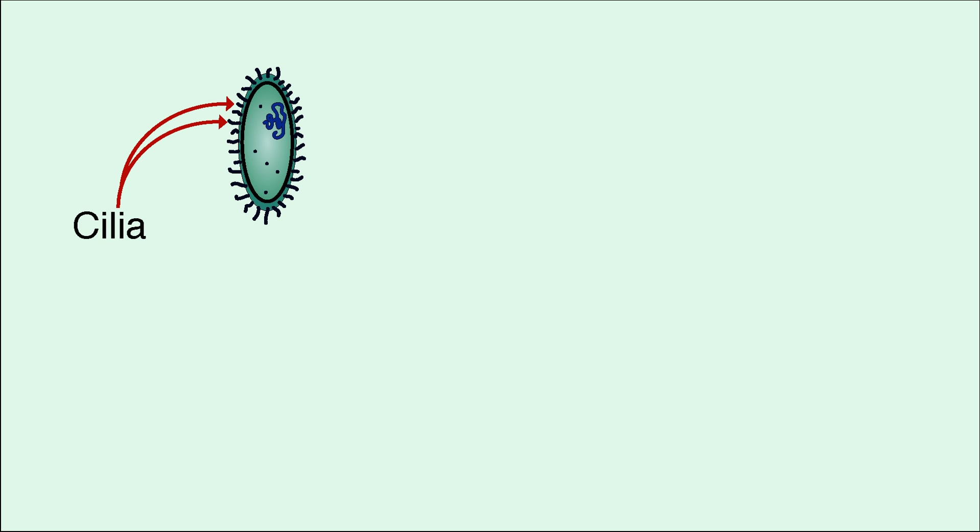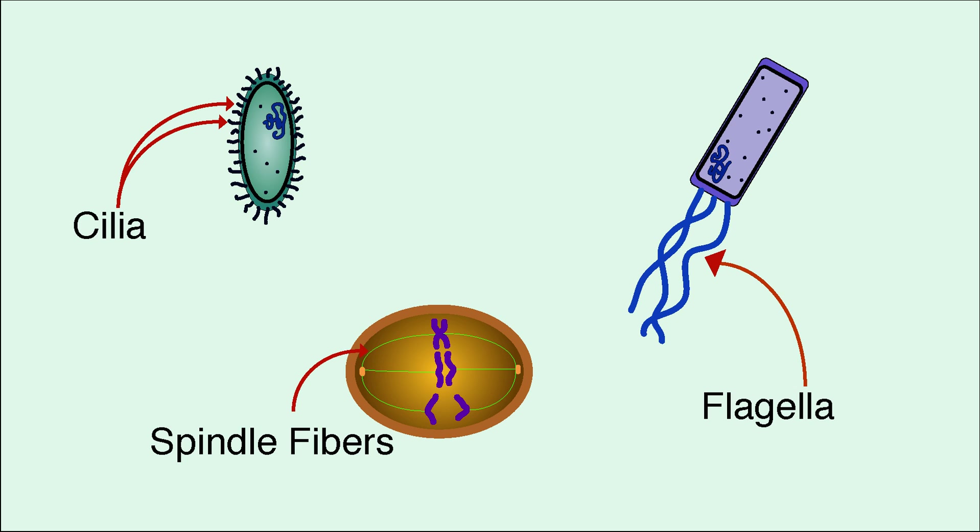Microtubules specifically form cilia and flagella to assist in cell locomotion, and spindle fibers to help separate DNA during mitosis and meiosis.